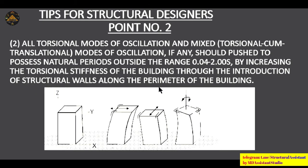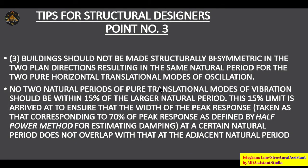Point number two: all torsional modes of oscillation and mixed modes of oscillation, if any, should be pushed to natural periods outside the range — either less than 0.04 seconds or more than two seconds — by increasing the torsional stiffness of the building through introduction of structural walls along the perimeter. In RCC frames, increasing RCC structural walls increases torsional stiffness and changes building behavior from mixed mode to translational mode.